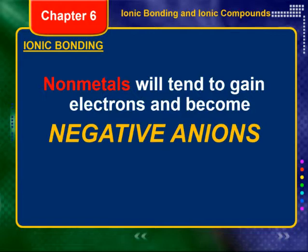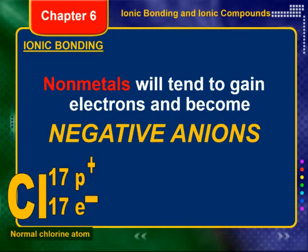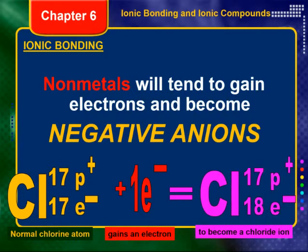Non-metals do the opposite — they will tend to gain electrons and become negatively charged anions. Let's look at the normal chlorine atom. It's number 17, so 17 protons. Neutral chlorine will also have 17 electrons. It's going to gain one so that it can attain the noble gas electron configuration of argon. Once it does that, it still has 17 protons but it's going to have 18 electrons and be a chloride ion.